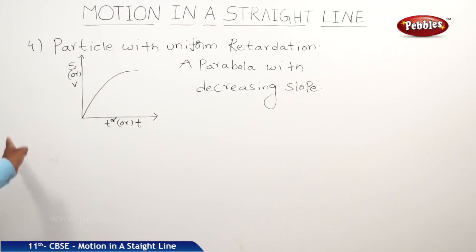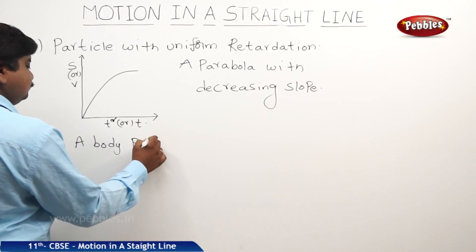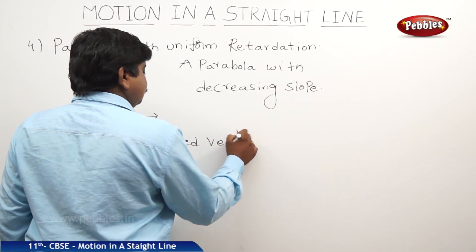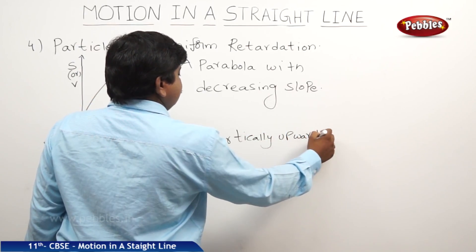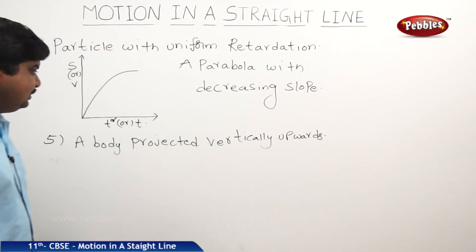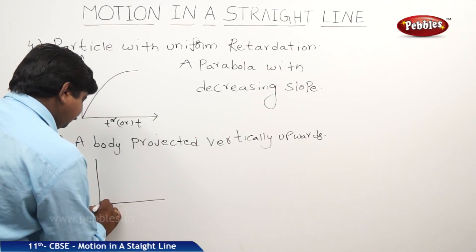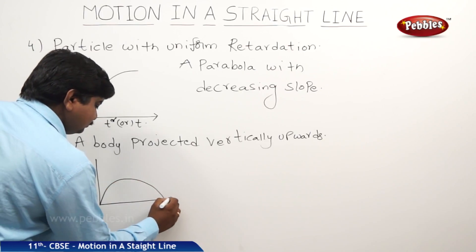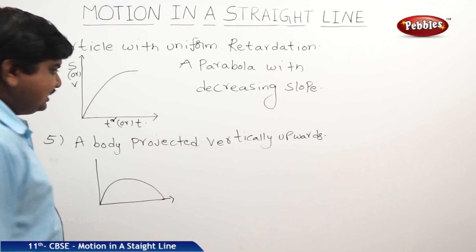If a body projected vertically upwards, if a body is projected vertically upwards, it will be negative. Then, the situation graph is like this. A perfect parabola which stands from minus k to plus k.